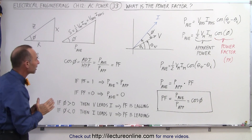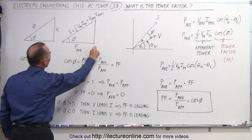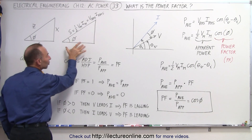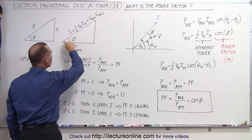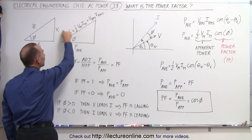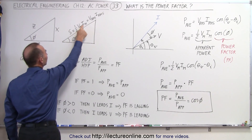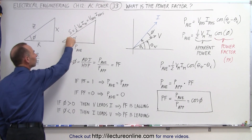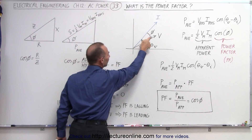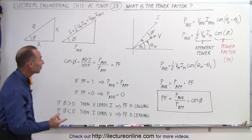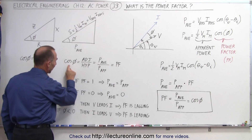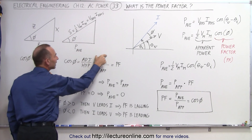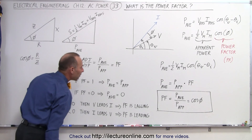We can draw a similar triangle for power. The adjacent side is the average power — the real power consumed by the resistive portion of the load. On this axis we can call that the apparent power S, which is one-half V_max I_max, or V_RMS times I_RMS. The phase angle here is the same phase angle we see in the impedance triangle. So the power factor PF, the cosine of phi, is the ratio of the adjacent side over the hypotenuse — the average power over the apparent power.